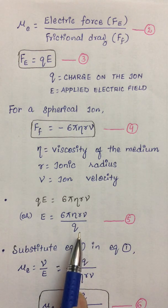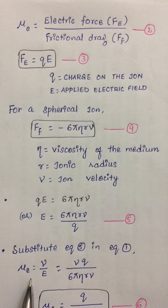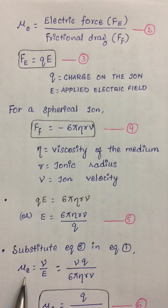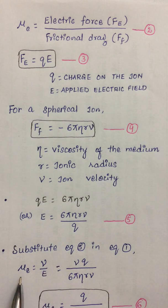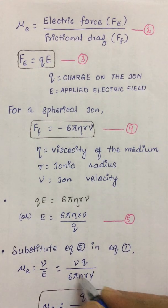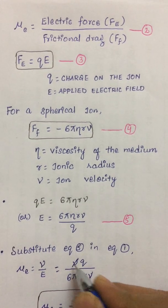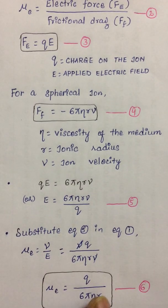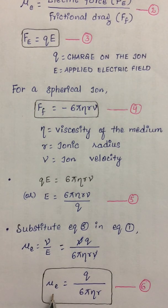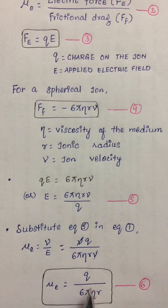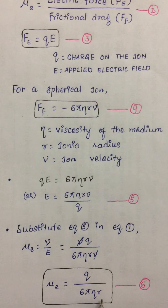From the equilibrium condition qE = 6πηrν, we get E = 6πηrν / q. Substituting this into the first equation ν = μe × E, and using μe = ν / E, we derive that the ionic mobility μe is a function of q, η, and r. The important result is that electrophoretic or ionic mobility depends on three factors: the charge on the ion (q), the viscosity of the medium (η), and the ionic radius (r).